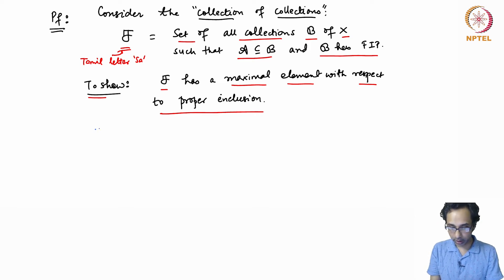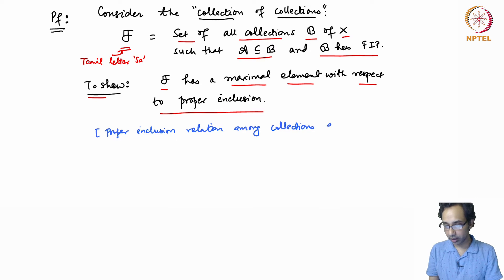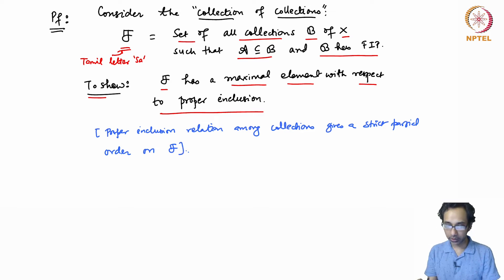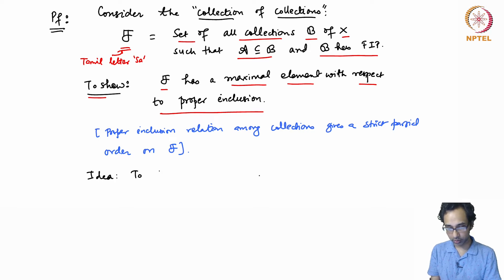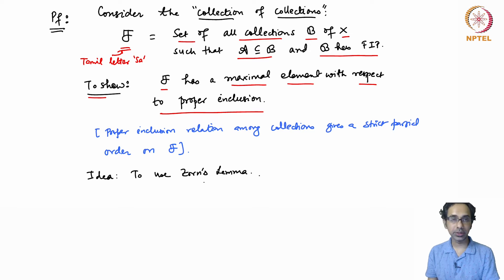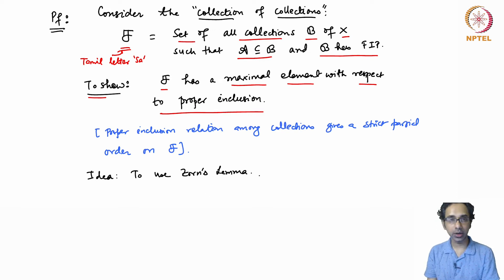Notice that the proper inclusion relation among collections gives a strict partial order. So we just have to show that this collection of collections has a maximal element with respect to proper inclusion. The idea is to use Zorn's Lemma, which states that if you have a set with a strict partial order such that every simply ordered subset has an upper bound, then the set has a maximal element.